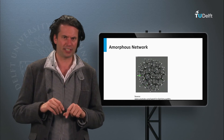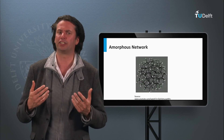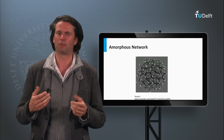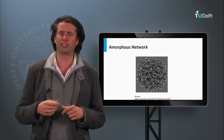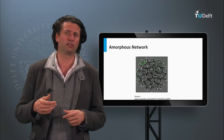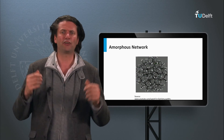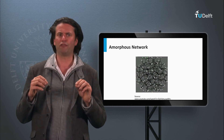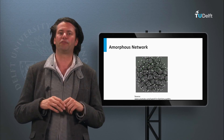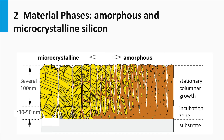In a real amorphous network there will be volume deficiencies in the lattice. Examples of volume deficiencies are vacancies, multi-vacancies, or nanovoid voids. The surfaces of these volume deficiencies are passivated with hydrogen.